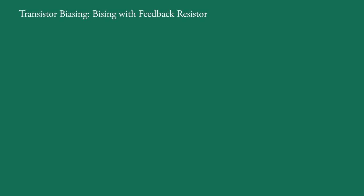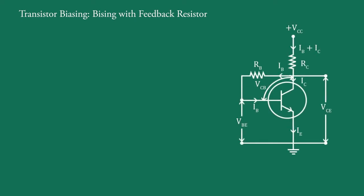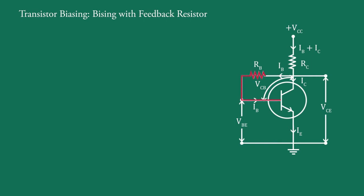In transistor biasing, we will discuss today biasing with feedback resistor. This is the circuit diagram of biasing with feedback resistor using an NPN transistor. Here, one end of resistor RB is connected to the base and the other end to the collector. The required zero signal base current is determined by the collector-base voltage VCB. Since the collector-base junction is reverse biased, it exhibits high resistance, so the necessary base current flows from collector to base through resistance RB.